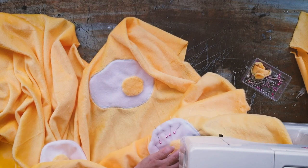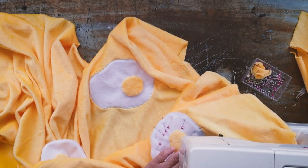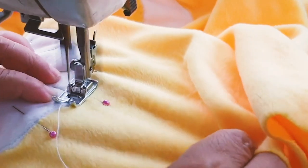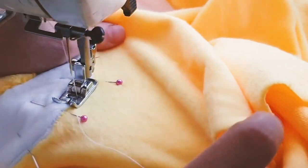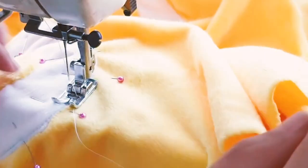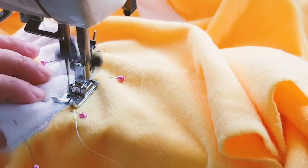I'm using zigzag stitches set at number two for both the stitch length and the stitch width. When you get to the end, you lift the needle up and then you switch it to a straight stitch and sew back and forth so the stitch won't fall off.